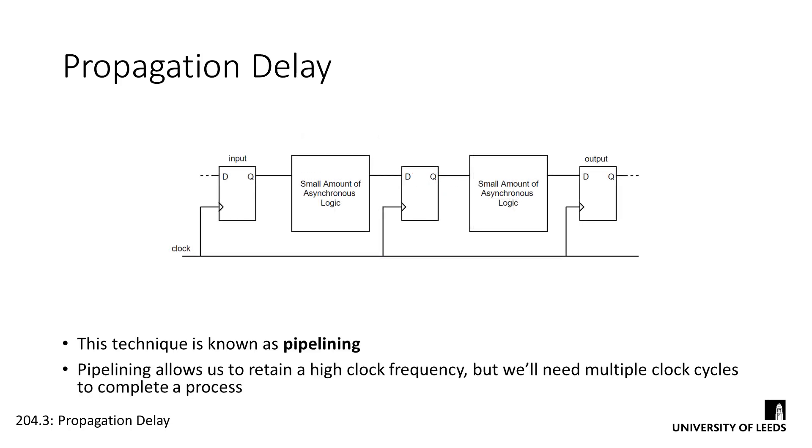This technique is known as pipelining, and is the more robust of the two solutions. Instead of having a single big block of asynchronous logic, we break the block down into smaller, more manageable blocks with smaller delays, and add registers to handle the signals at the interim stages. This process allows us to keep our propagation delays down, but comes at the cost of requiring multiple clock cycles to complete a process. We'll take another look at this point when we start to deal with registered logic later on in the module.